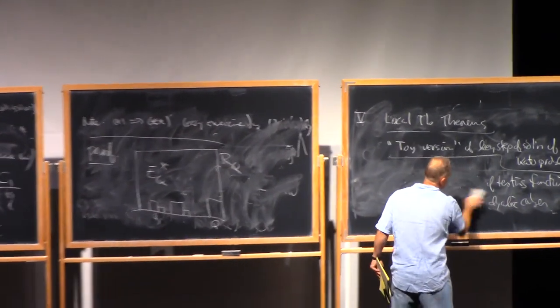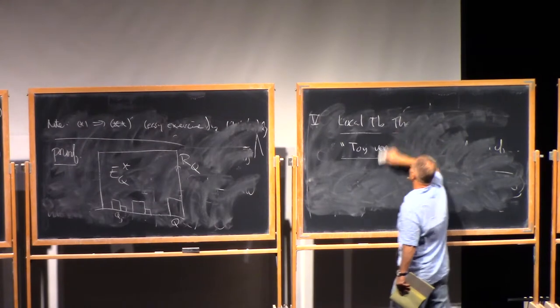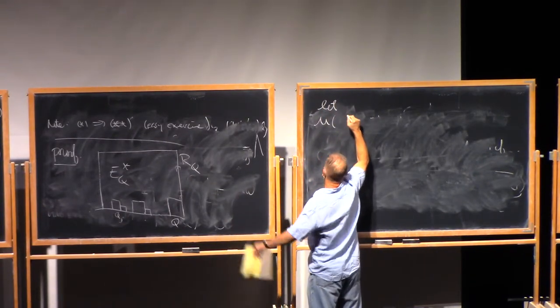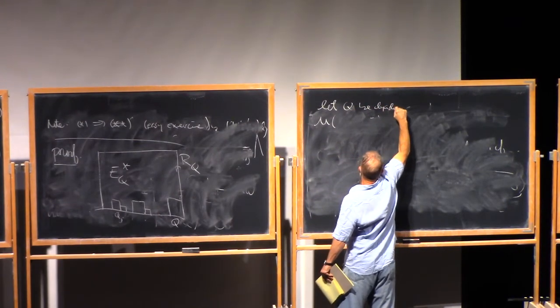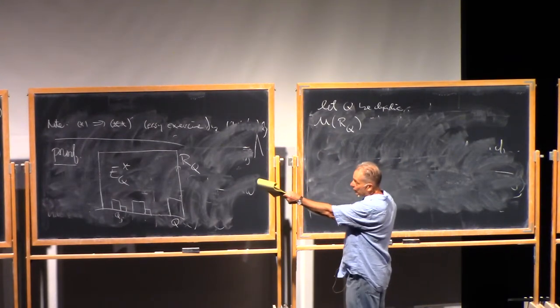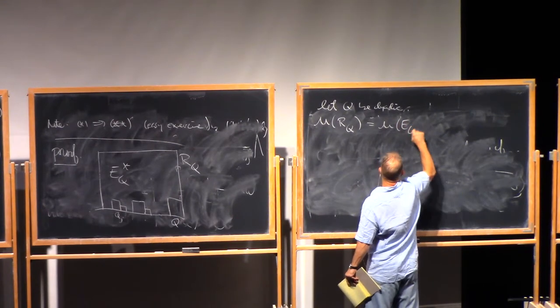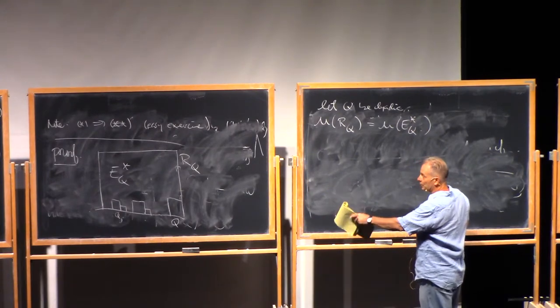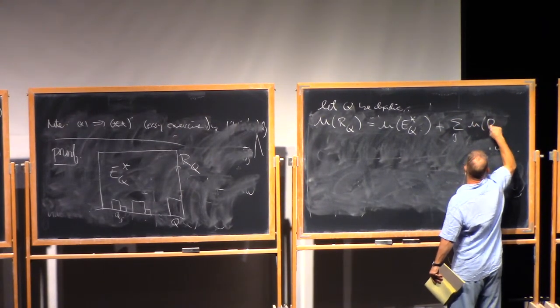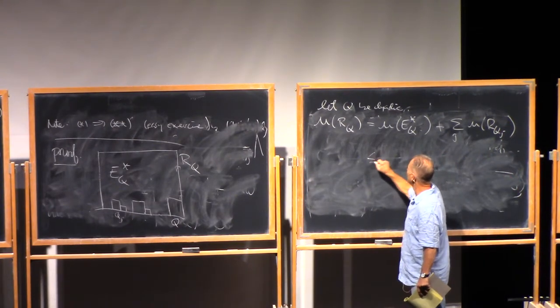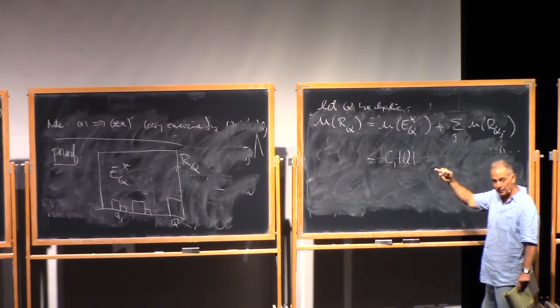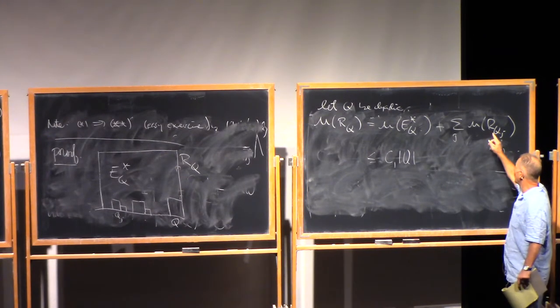So how do we prove this? The proof is quite easy. You just do the natural thing. So what you do, of course we're trying to control the size of mu of R_Q. So you split it into two pieces. There's the piece in E_Q^*, that is the sawtooth region, and then there's the part that's covered up by the R_{Q_J}s. So now, by assumption, by hypothesis, this part is less than or equal to C1 times the measure of Q. And now we use the fact that this hypothesis holds in a scale invariant way for every cube Q. So it holds again in the Q_Js. So we iterate.